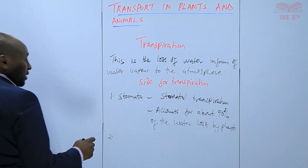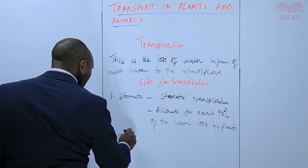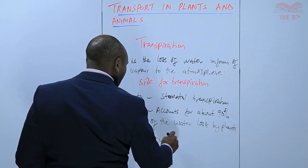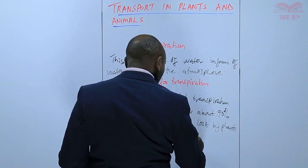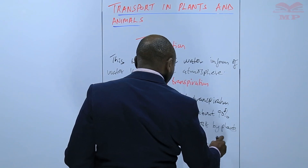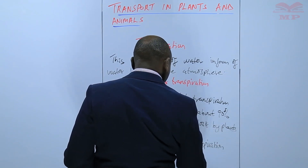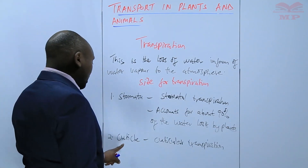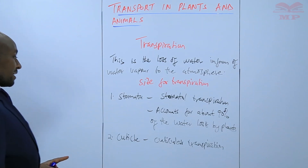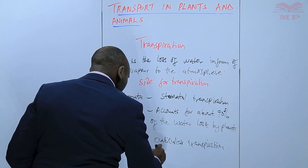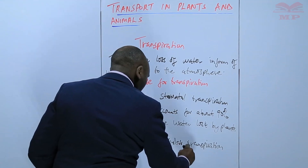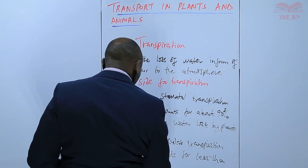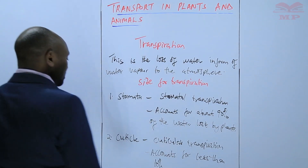Number two, we have the cuticle, and this one we call it cuticular transpiration. This cuticular transpiration occurs through the cuticle, and this accounts for less than 10% of the water that is lost.